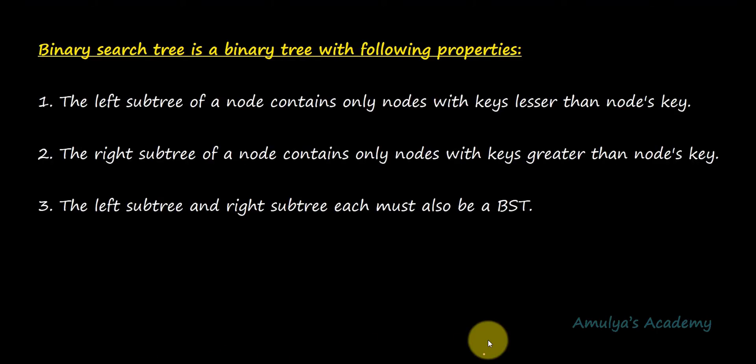The first property is the left subtree of a node contains only nodes with keys lesser than the node's key. The second property is the right subtree of a node contains only nodes with keys greater than the node's key. And the third property is the left subtree and right subtree each must also be a BST — binary search tree.